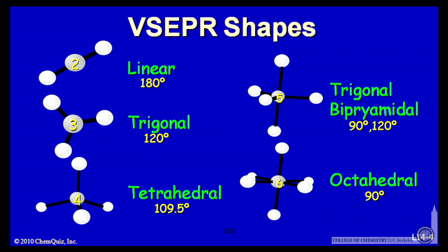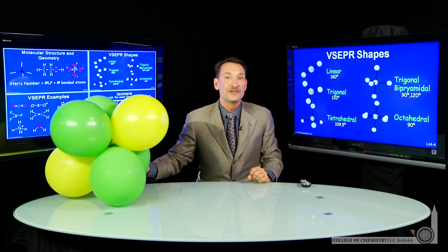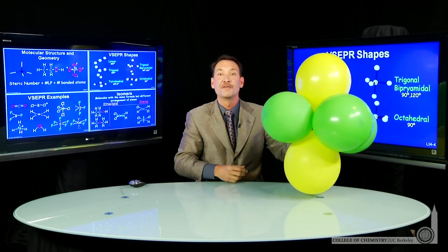Each bond angle is 90 degrees. So all the positions are equivalent. So six things, octahedral shape, all the positions are equivalent.